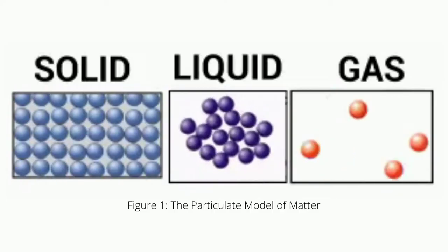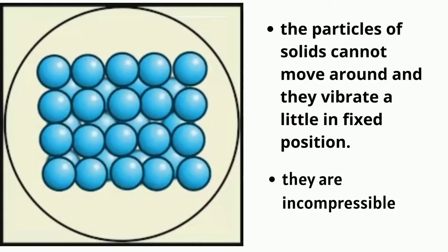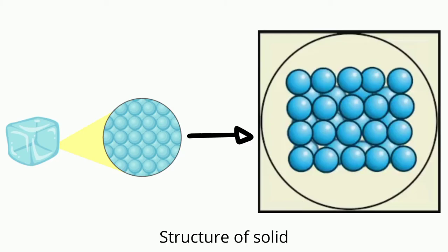The particulate model of matter in figure 1 shows that the particles of solids cannot move around and they vibrate a little in fixed position. Thus, they are incompressible. The particles, ions, atoms, or molecules are tightly packed together in the solid.